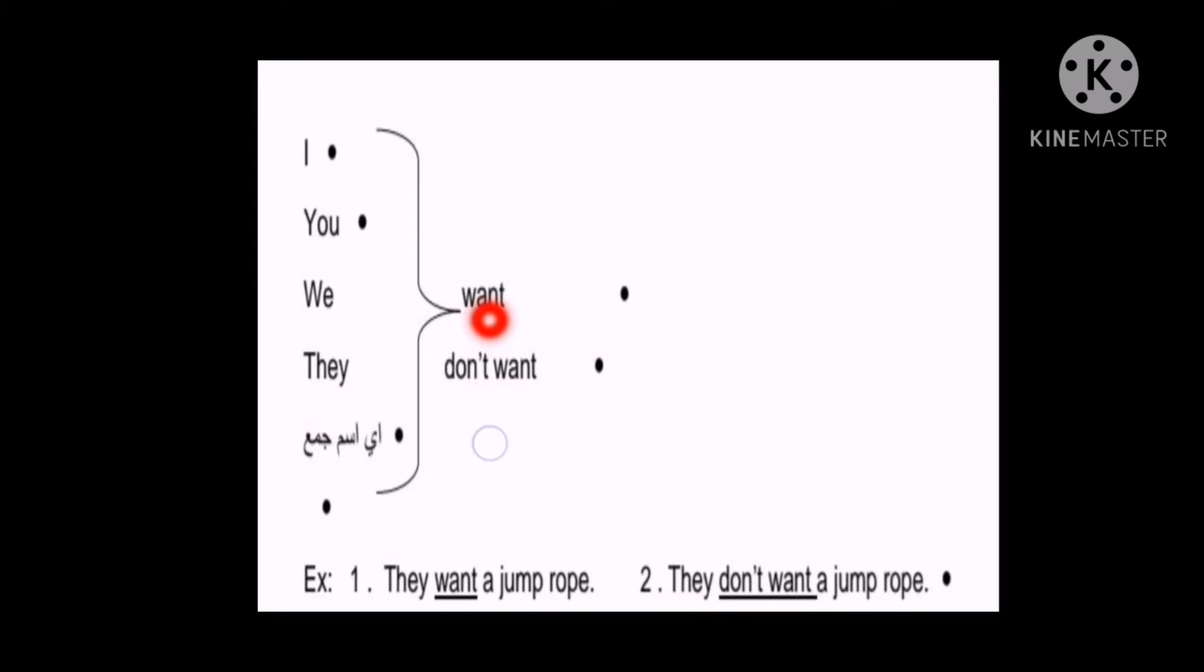So in the negative case, what did we do? We write don't want. So don't. Why don't? Because I, you, we, they and any plural noun, all of them take don't. And after don't and doesn't we have the verb base or infinitive. So I don't want, you don't want, we don't want, they don't want.